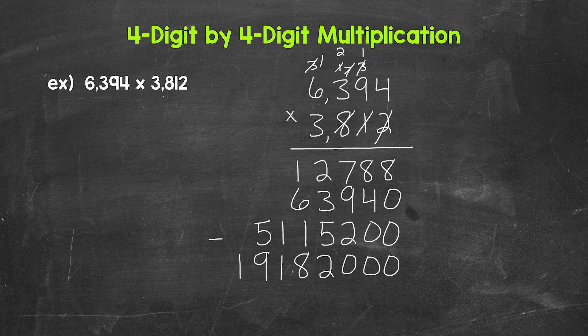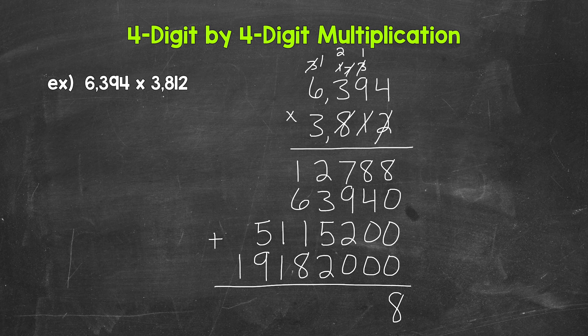Lastly, what we need to do is add all of these for our final answer. Starting with the ones place: 8 plus 0 plus 0 plus 0 is 8. Then in the tens place: 8 plus 4 is 12, plus 0, plus 0 is 12 — write the 2, carry the 1. Then 1 plus 7 is 8, plus 9 is 17, plus 2 is 19, plus 0 is 19 — write the 9, carry the 1.